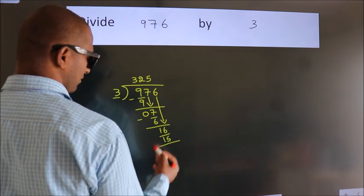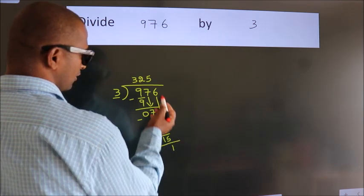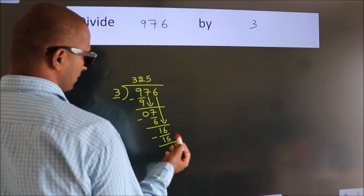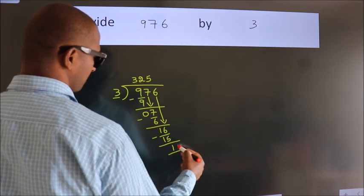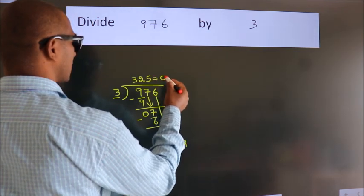Now, we subtract. We get 1. After this, no more numbers to bring it down. So, we stop here. This is our remainder. This is our quotient.